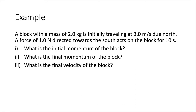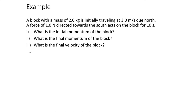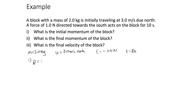In this example problem, we have a block with a mass of 2 kilograms which is initially travelling at 3.0 metres per second due north, so u equals 3.0 m/s north. A force f equals −1.0 Newtons directed towards the south acts on the block for 10 seconds. Part one asks for the initial momentum: p equals mv equals mu equals 2 times 3, which is 6 Newton seconds north.